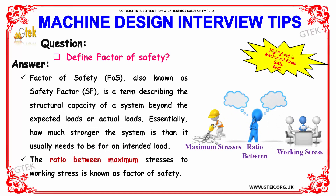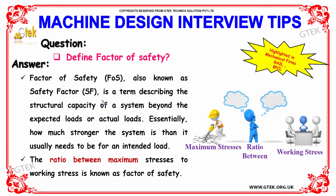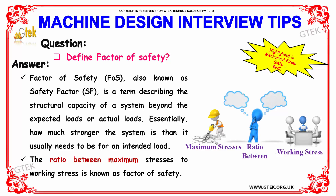The first question is: define factor of safety. Factor of safety (FOS), also known as safety factor (SF), is a term describing the structural capacity of a system beyond the expected or actual loads — essentially how much stronger the system is than it usually needs to be. The ratio between the maximum stress to working stress is known as the factor of safety.